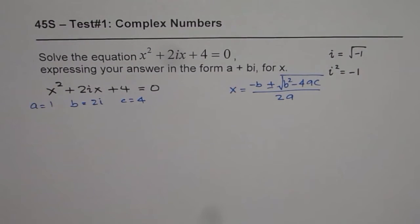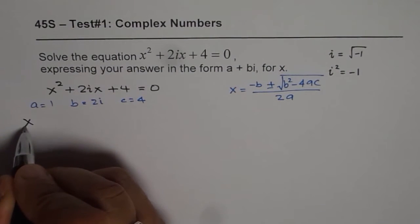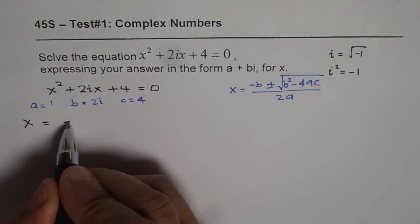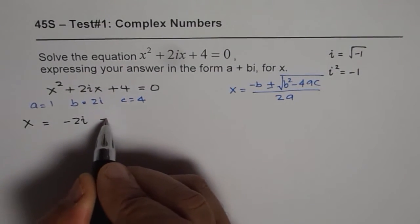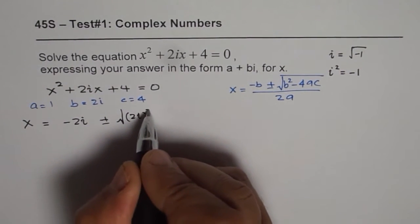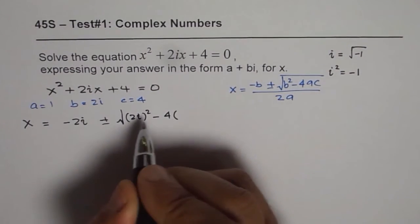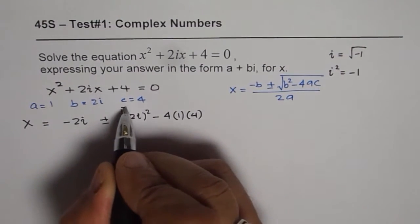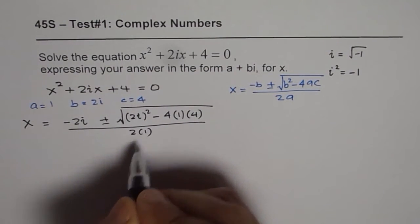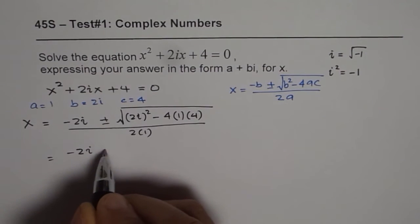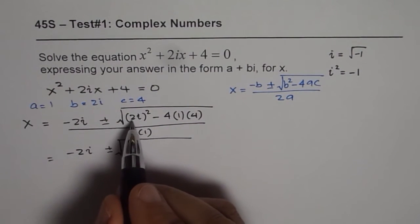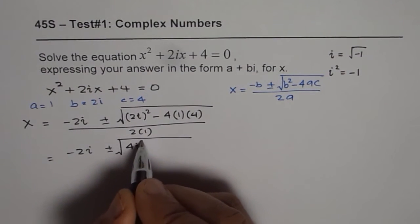So let's substitute these values and find the value of x. x equals minus b, which is minus 2i, plus or minus square root of b squared, which is 2i squared, minus 4 times a is 1 and c is 4.